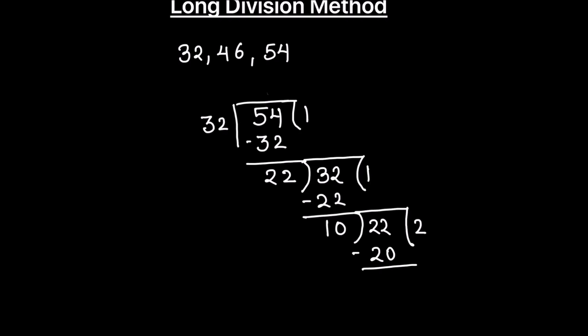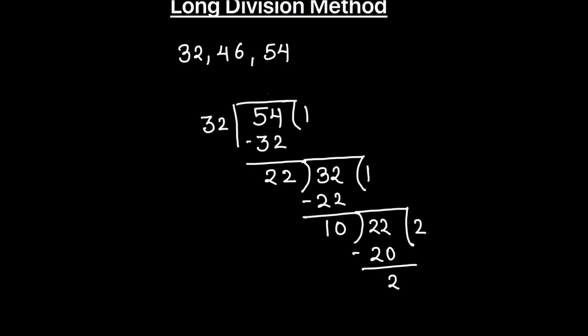Our remainder is 2. This remainder 2 will act as the divisor for the next step, and our new dividend will be the previous divisor, which is 10. Now we divide 10 by 2. 2 times 5 is 10.